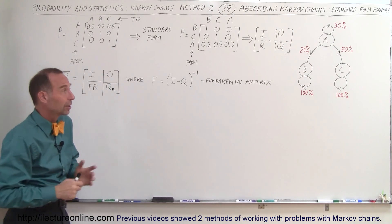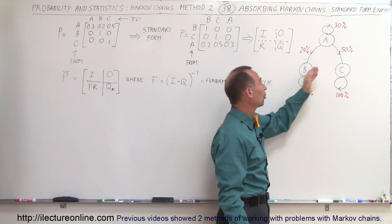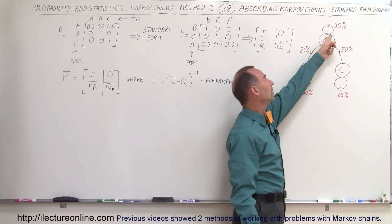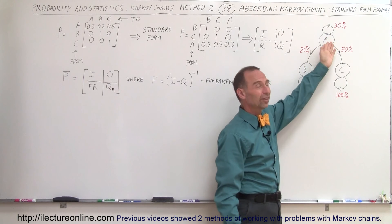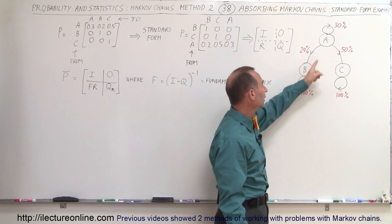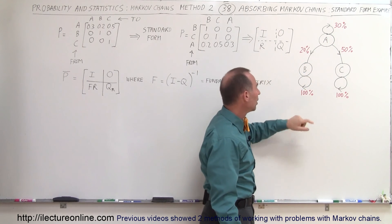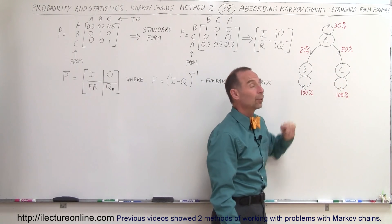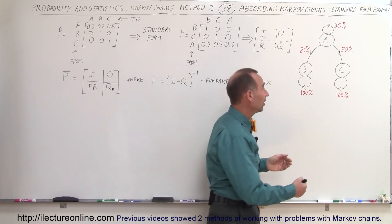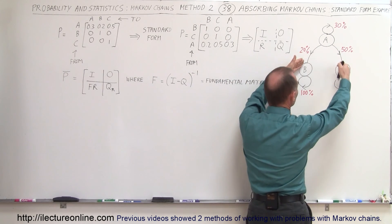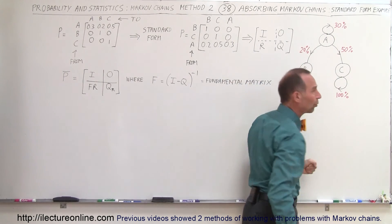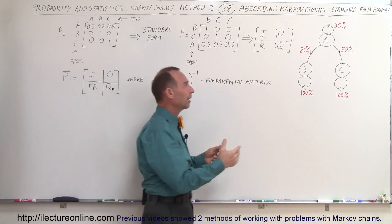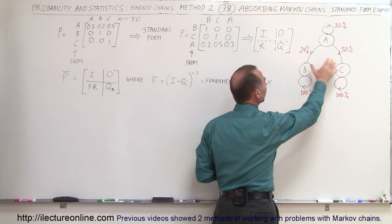To make this more clear, let's say we have an example with three stores. Store A keeps 30% of the customers going to the same store, but 20% will go to B and 50% will go to C. Store B will retain 100% of their customers and store C will retain 100% of their customers. Since all customers that end up in store B and C will not return to another store, those become absorbing states, and eventually the entire population will end up in B and C.